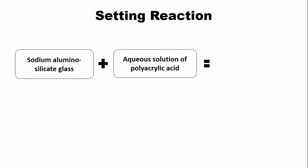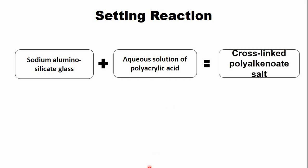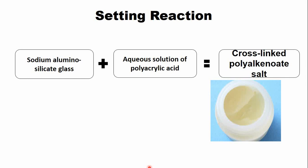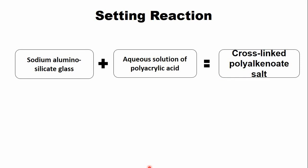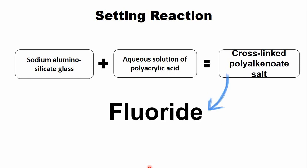In the setting reaction, the sodium aluminum silicate glass — the main ingredient of the powder — reacts with the aqueous solution of polyacrylic acid to form a cross-linked polyalkenoate salt. The set material must be protected from moisture using a water-resistant coating such as vaseline, as otherwise the properties of the cement will be disturbed. The set material releases fluoride into the surrounding environment and also absorbs fluoride when the fluoride concentration is high — this is known as the recharge mechanism in glass ionomer cement.